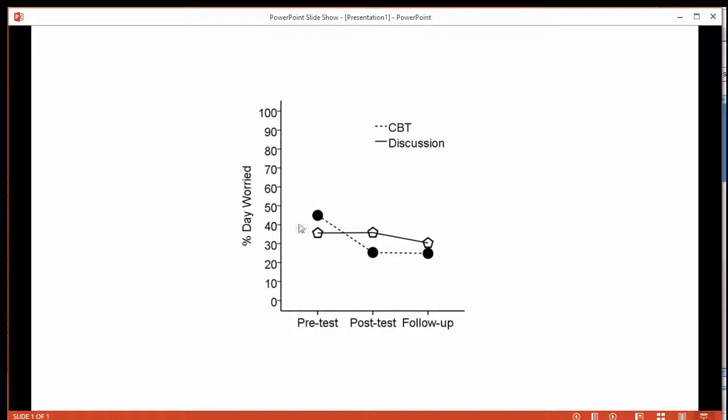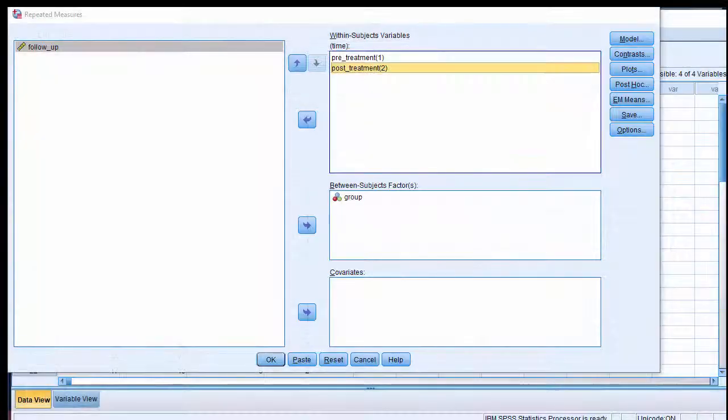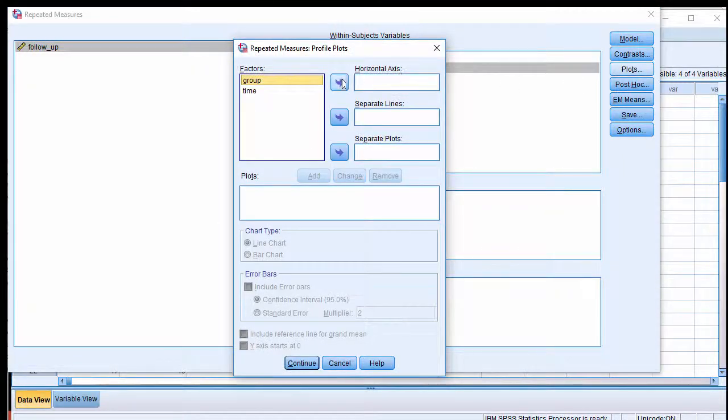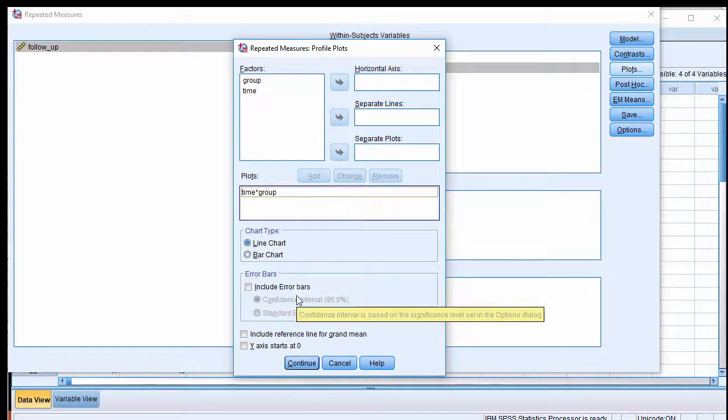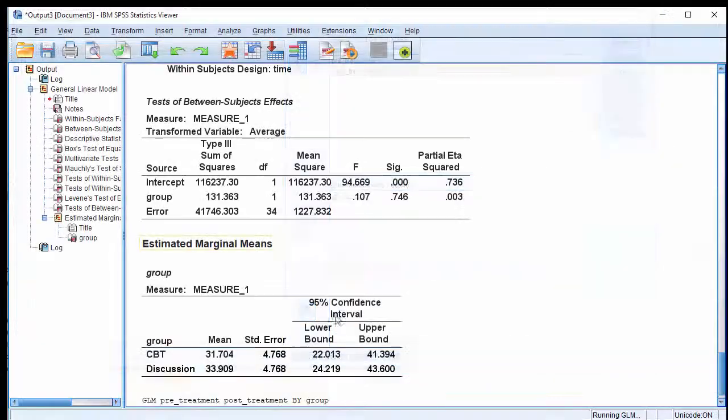So I'm going to first test this here. My hunch is that there's going to be a significant effect here because the lines are criss-crossing. This is a disordinal type of interaction, probably going to be happening here. I'm going to plot the means, put group into separate lines and time on the horizontal axis. Click continue and click OK.